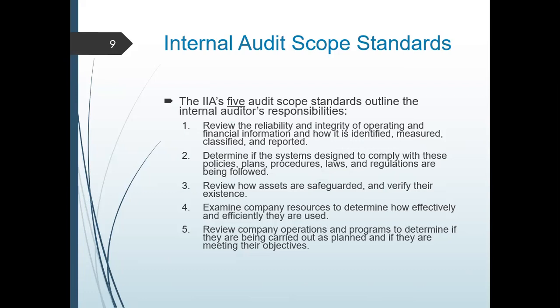Next, your internal auditor should determine if the system is designed to comply with policies, plans, procedures, laws, and regulations. Your internal auditor should know better than top management in terms of the control and system. Meaning, when you hire an internal auditor, the first thing they do is check your system. They should be knowledgeable of the system so that later on, they can identify whether a specific document, when it flows into the system, can be accessed by Department B — and whether Department B should have that access. If yes, okay; if not, put a control in place.